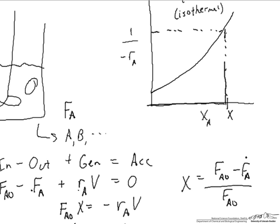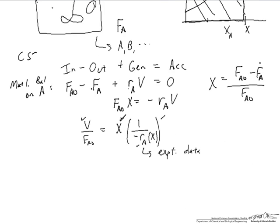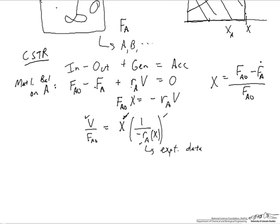And this works because the reciprocal reaction rate is uniform everywhere within the CSTR. We'll see that things are different when we look at a tubular reactor. The volume divided by the inlet flow rate of A is equal to the area of that rectangle when we plot our experimental data in terms of the reciprocal rate versus conversion of component A.